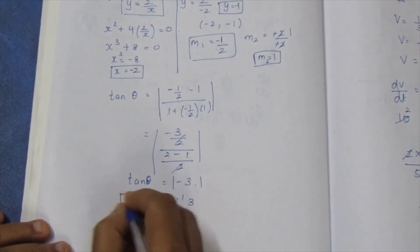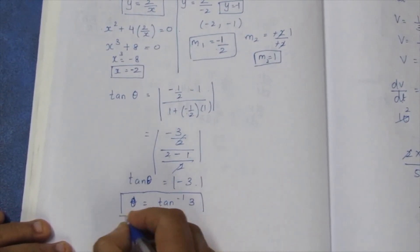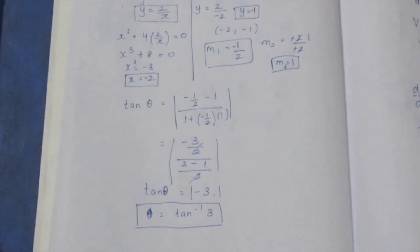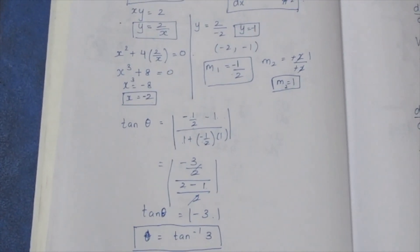The angle between the rectangular hyperbola and the parabola is tan inverse 3. That is the answer to this sum. Thank you.